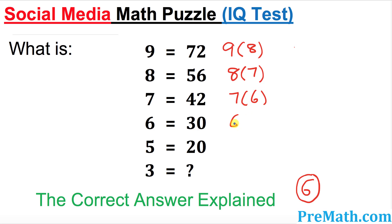This is going to be 6 times 5. This is going to be 5 times 4. So what do you see from these? There's a specific pattern going on. You are multiplying a number by one number less — so 9 times 8, then 8 becomes 7, one less, and so on. By just simply following the same pattern,